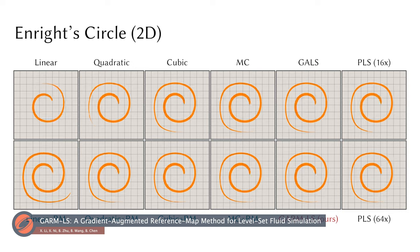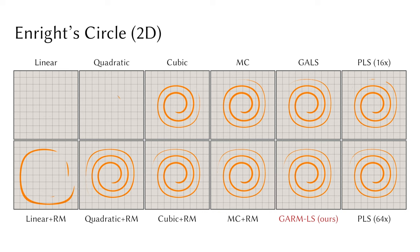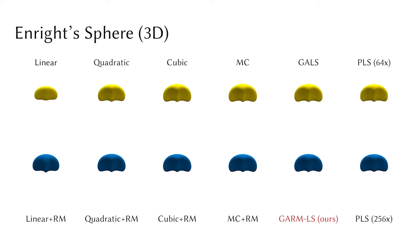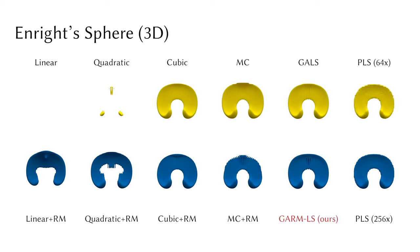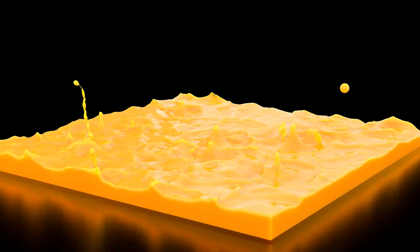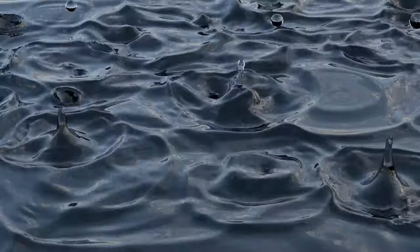One problem with fluid simulation using grid-based level sets is that small shape features can be lost depending on the grid size. Another problem is that small volumes, such as droplets and thin sheets, smear out quickly due to volume loss during advection. In this work, a reference map algorithm to concurrently convect level set values and gradients is used to preserve volumes and interface features. The algorithm outperforms existing solutions, and here we show raindrop collisions and splashes, demonstrating the accurate simulation of surface tension flow phenomena.